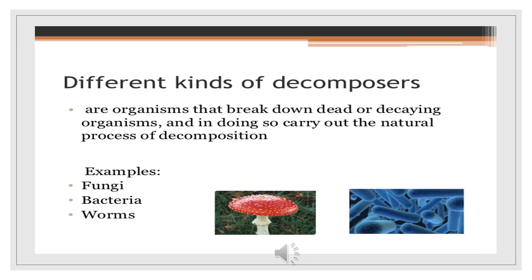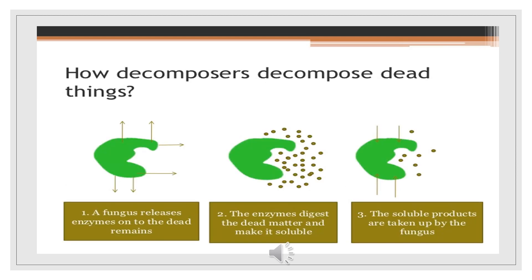Different kinds of decomposers are organisms that break down dead or decaying organisms, and in doing so carry out the natural process of decomposition. Examples include fungi, bacteria, and worms. How decomposers decompose dead things: a fungus releases enzymes on dead remains; the enzymes digest the dead matter and make it soluble; the soluble products are then taken up by the fungus.